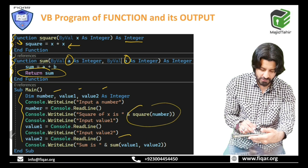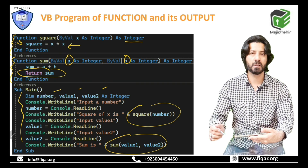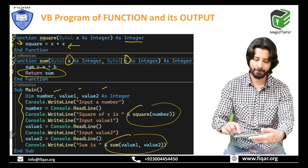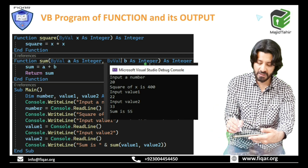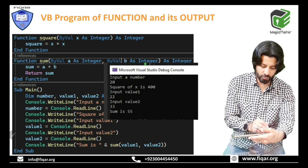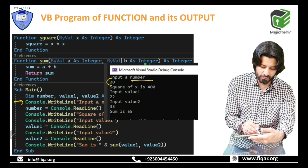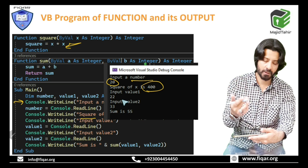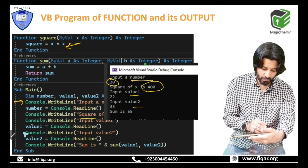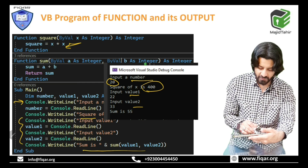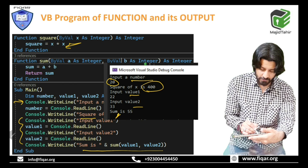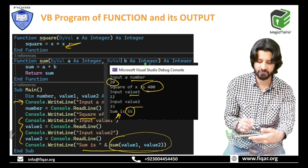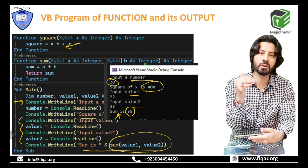This is the call to the first function and this is the call to the second function. The program prompts for a number — the user inputs 20 — and the square function is called, returning 400, which is displayed. Then value1 and value2 are input, the sum function is called, and the result 55 is displayed.